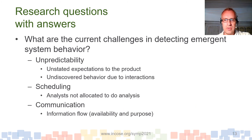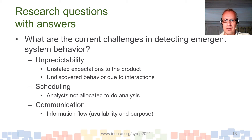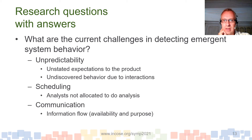To answer the first research question — what are the current challenges in detecting emergent system behavior — they include unpredictability, unstated expectations of the product, and undiscovered behavior due to interactions. We also have scheduling issues with analysts not allocated to do analysis, resulting in little analysis being done. For communication, the information flow is not as it should be: analysts should at least know that test results are available, the purpose of those tests, and what they are supposed to check within the results.